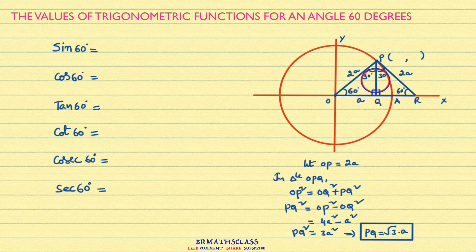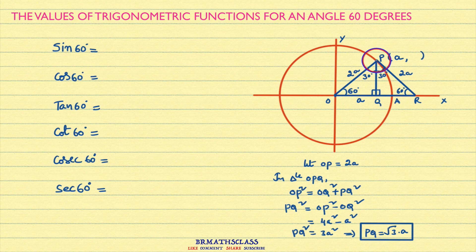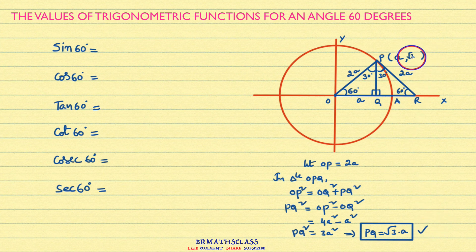Now I will find the coordinates of point P. The X coordinate is the perpendicular distance from the point to the Y axis, which is the length OQ. We considered OQ as A, so the X coordinate is A. The Y coordinate is the perpendicular distance from the point to the X axis, which is the length PQ. We found PQ to be root 3 times A, so the Y coordinate is root 3 times A.